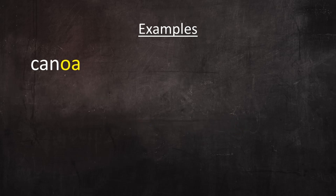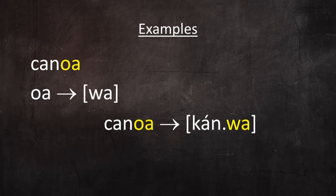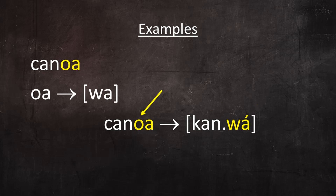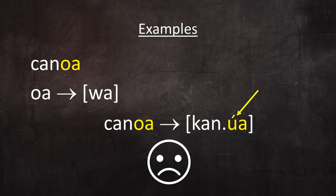The word canoa contains the hiatus OA. An overenthusiastic student might be tempted to convert OA to WA, but again there's a problem: in the original word the stress falls on the O, but in the converted form it would fall on a different vowel. Canoa versus *canwa. You could change the O to U and leave the stress where it is, but that doesn't resolve the hiatus to a diphthong — it just creates a different hiatus. This is a pointless or even destructive sound change, and Spanish doesn't do it. Because of where the natural stress falls, the OA hiatus in canoa cannot resolve to a diphthong.